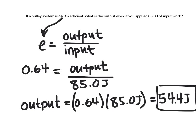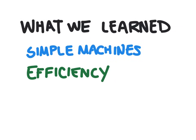And that is efficiency in simple machines. So we learned about the six different kinds of simple machines, we learned the equation to calculate efficiency, and we learned how to solve problems involving that equation.